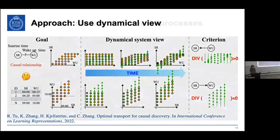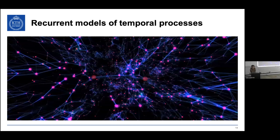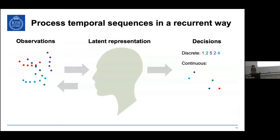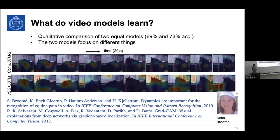Moving on to the other line of work, where we argue that there are advantages to having recurrent models. A human makes observations about the world and looks at temporal coherence — it's a very strong cue to what is happening. We basically look at temporal coherence over time to make decisions. This is, of course, what you do in video analysis.